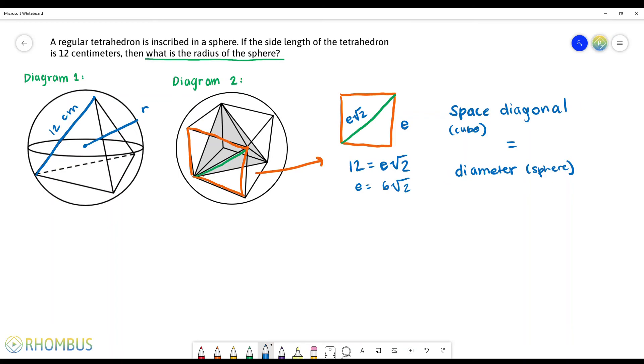So we now can figure out our space diagonal value since we know that the cube's edge length is 6√2. So the formula to obtain the space diagonal of the cube is E times the square root of 3, where E again is our edge.